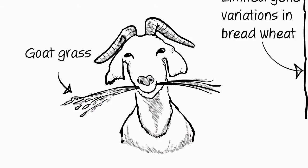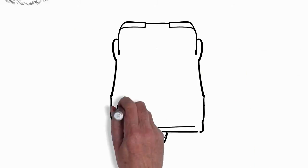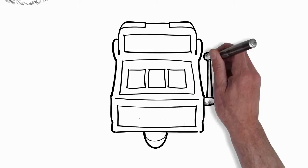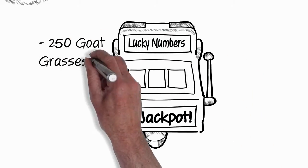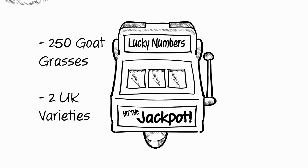It's quite a large scale project that we're undertaking here. There's around about 250 goat grasses and we're crossing to two UK varieties, so the scale of the project soon increases. The object is to bring in novel genes using conventional plant breeding methods.